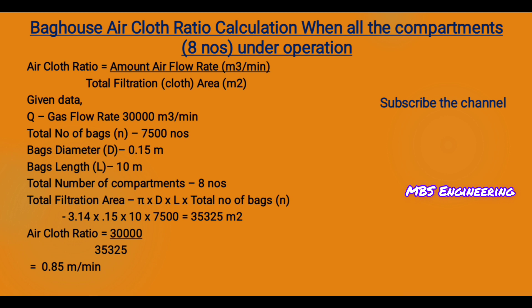Assuming all compartments are in operation, the given data is: gas flow rate Q = 30,000 cubic meters per minute; total number of bags N = 7,500; bag diameter D = 0.15 meter; bag length L = 10 meters; and total number of compartments = 8.